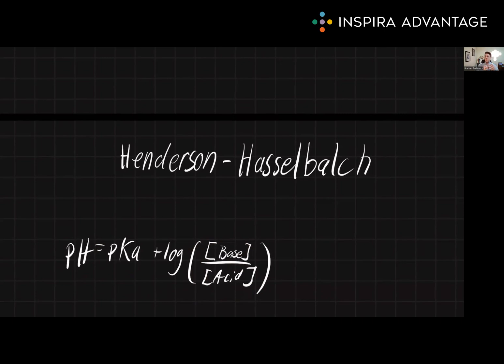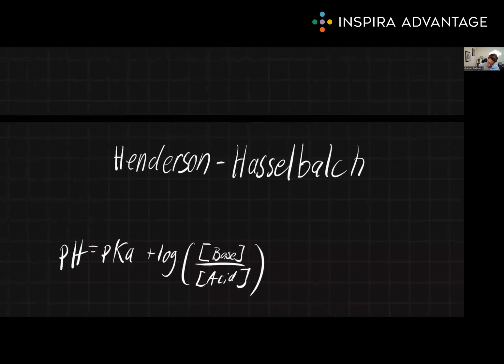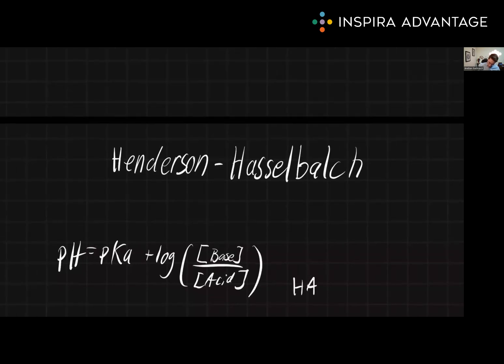Deprotonated means we're missing a proton. Protonated means we have a proton. So the acid form could also be written as HA, and the base could be written as A minus. This is another common notation you're likely to run across either while studying for the MCAT or while actually taking the MCAT.